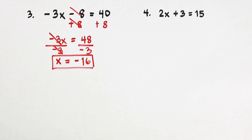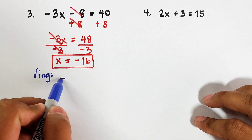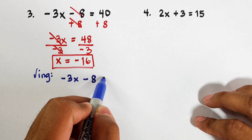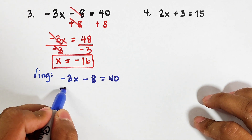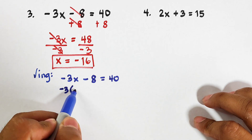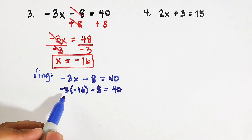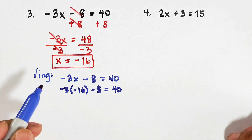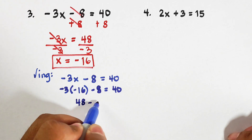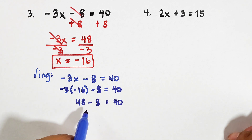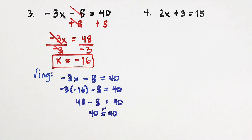To check that the value of x is negative 16, same process — checking. Using the original equation: negative 3x minus 8 is equal to 40. We substitute x with negative 16: negative 3 times negative 16, then minus 8 is equal to 40. Negative times negative is positive, so 3 times 16 is 48, minus 8 is equal to 40. On the other side is also 40 — they are equal.